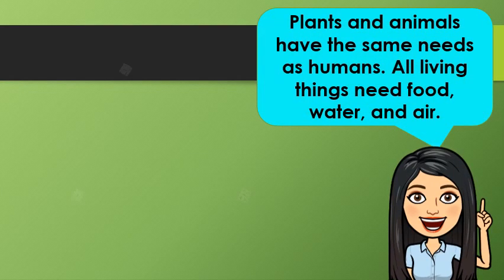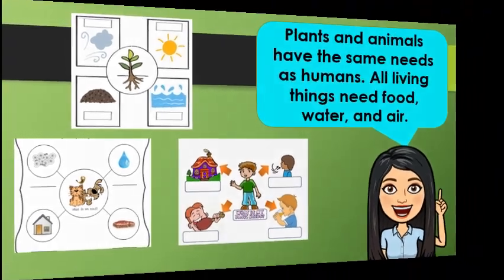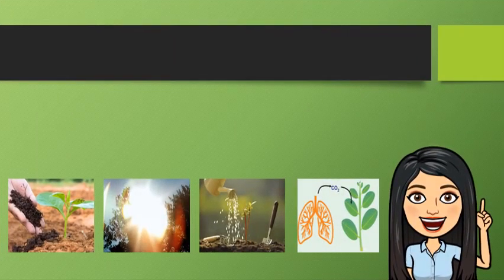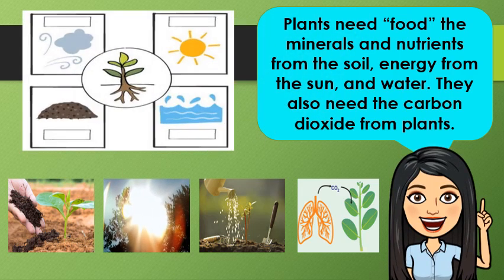Plants and animals have the same needs as humans. All living things need food, water, and air. Plants need food — the minerals and nutrients from the soil, energy from the sun, and water. They also need carbon dioxide. These are the basic needs of plants for them to make their own food.